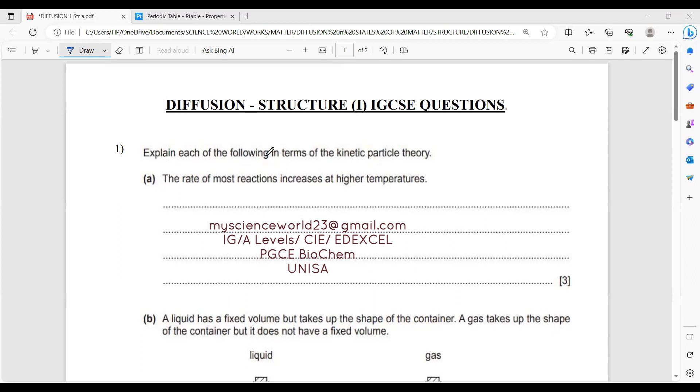Question one: Explain each of the following in terms of the kinetic particle theory. Part A: The rate of most reactions increases at higher temperatures.